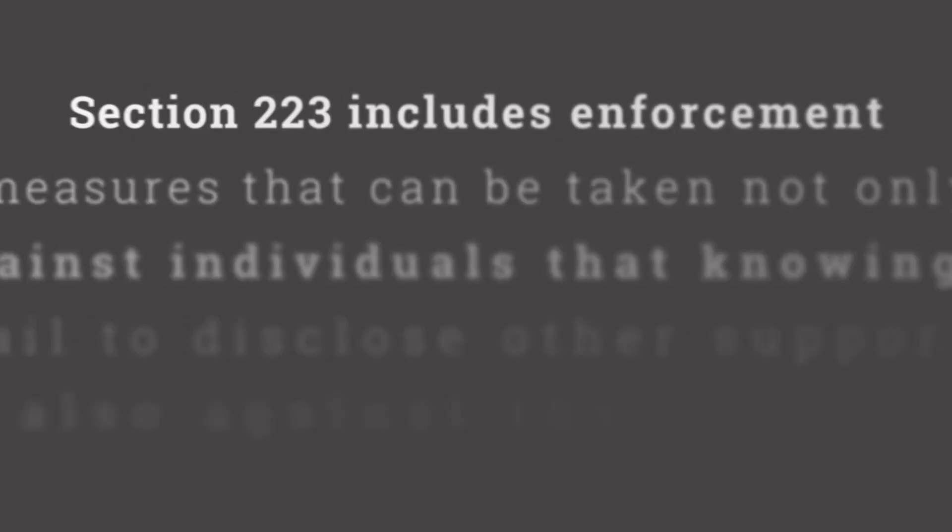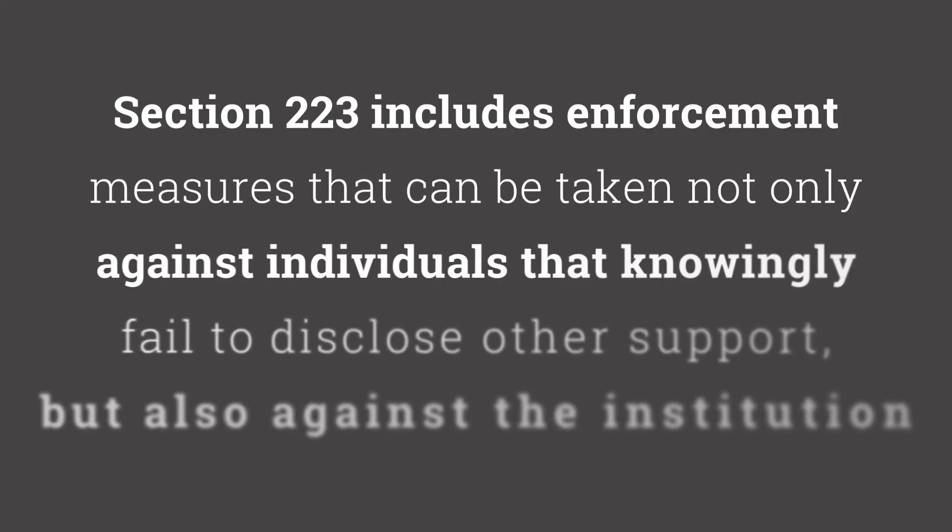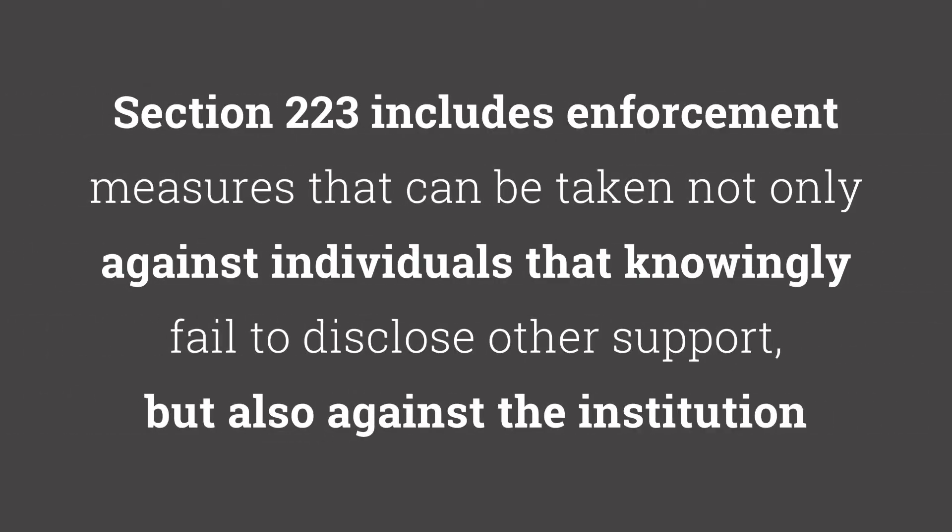Section 223 includes enforcement measures that may not only be taken against an individual that fails to properly disclose other support, but also against the institution. An institution may be liable under Section 223 if it meets one of three criteria.